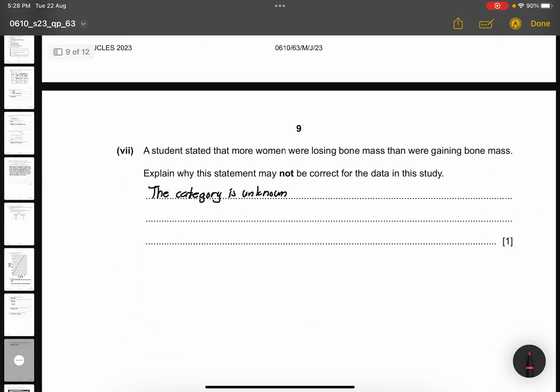Part 7. A student stated that more women were losing bone mass than were gaining bone mass. Explain why this statement may not be correct for the data in this study. Because the category is unknown. We don't know what it is linking to. So, that's why we need to say that the category or whatever is happening is unknown. It's not actually known in this investigation.